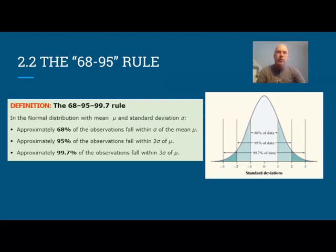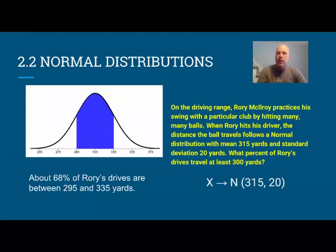68-95 are the numbers that I really remember, and that does have a short name. It's oftentimes called the empirical rule, just meaning a rule that is easy to remember: the 68-95 rule, the short and snappy rule.